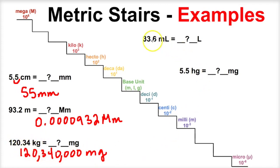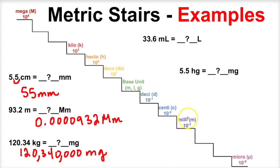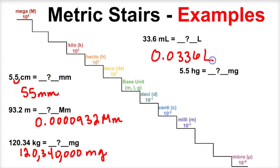Let's take a look at this example. We have 33.6 milliliters — milli is right here — and we want to figure out how many liters this is. Liters is right here. In order to go from milli up to liters, which is a base unit, we're going to have to take one, two, three steps. So this decimal is going to have to be moved three times to the left. And we end up with 0.0336 liters. So 33.6 milliliters is the same thing as 0.0336 liters.